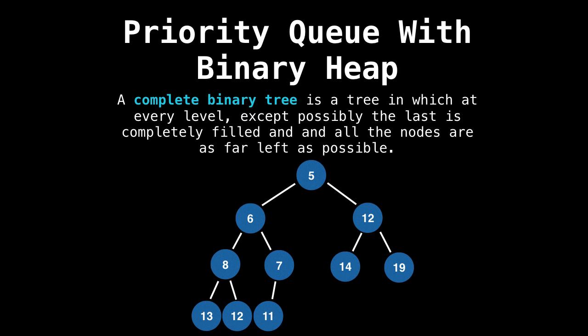The next important bit of terminology we need to understand is the complete binary tree property. The complete binary tree property means that at every level, except possibly the last, is completely filled, and that all the nodes are as far left as possible in the binary tree.